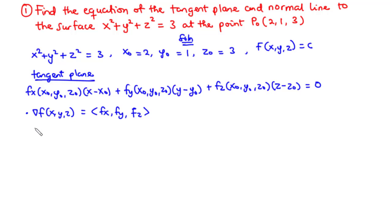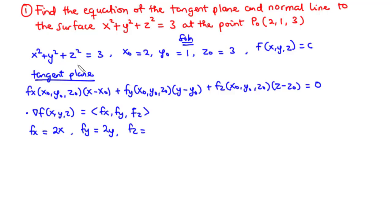Let's find Fx, which is the partial derivative of the function with respect to x. We differentiate with respect to x and keep y and z constant. Differentiating x squared gives 2x; the rest are constant so they go to 0. Similarly for Fy, differentiating gives 2y. And for Fz, differentiating gives 2z. Therefore, the gradient of the function has components 2x, 2y, 2z.